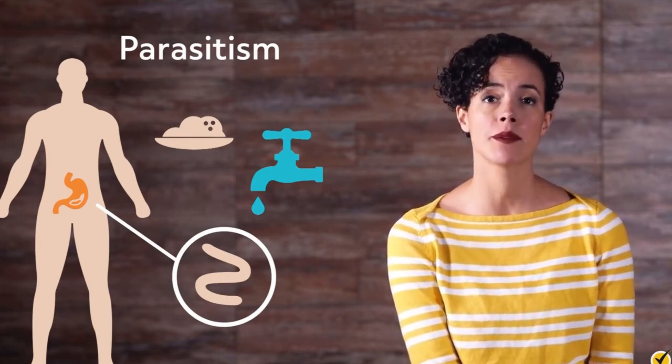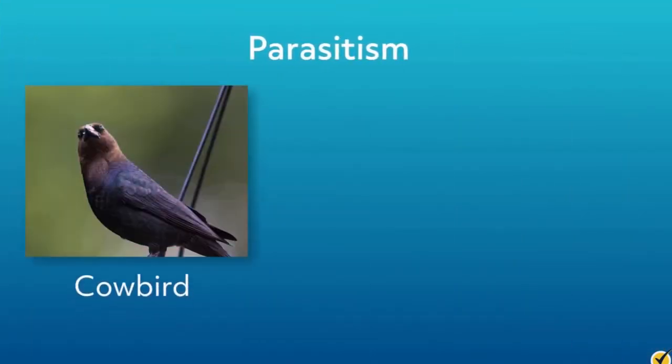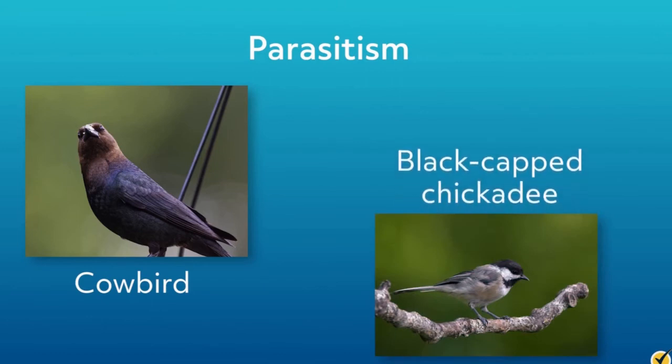However, parasitic relationships aren't limited to the microscopic or small-scale world. Cowbirds are a species of birds that, instead of raising their own young, take advantage of another bird species since birds cannot easily distinguish between their young. Female cowbirds will lay their eggs in another bird's nest, like a black-capped chickadee's, and the female black-capped chickadee will feed both her own young and the cowbird nestling. However, cowbirds are much larger than most birds, so they demand more food and nest space. In the end, some of the black-capped chickadee's young will die while the cowbird nestling lives.